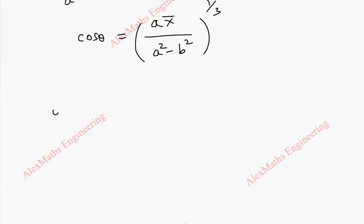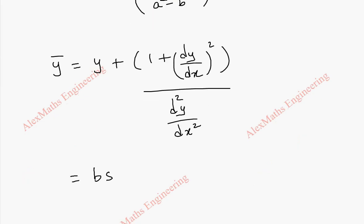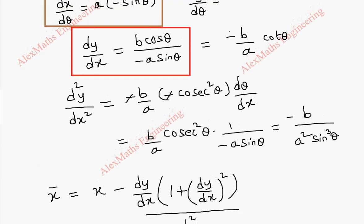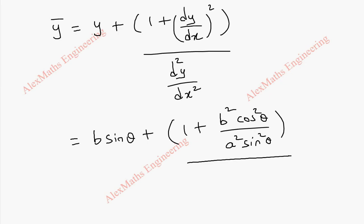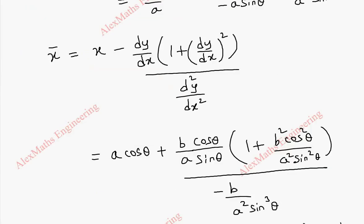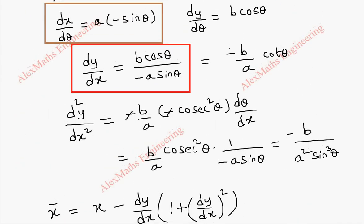In the same way, we are going to find ȳ, which is y plus (1 plus (dy/dx)²) divided by d²y/dx². So this will be b sin θ plus 1 plus b²/a² (since dy/dx squared gives b²/a²), whole divided by the second differentiation, minus b by a² sin³ θ. So we have a² sin³ θ in the denominator. Let's check once again: minus b by a² sin³ θ.